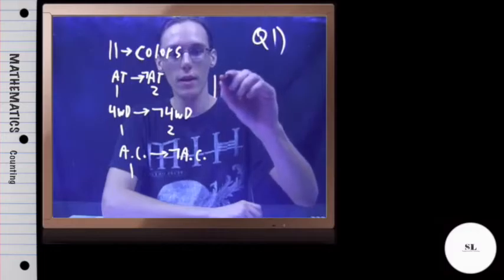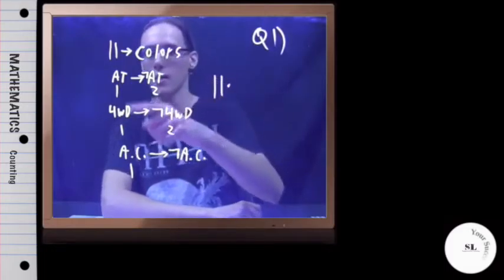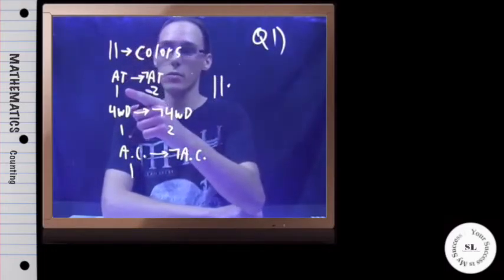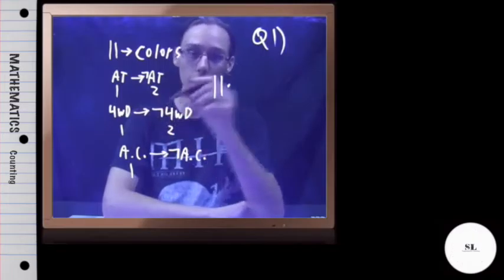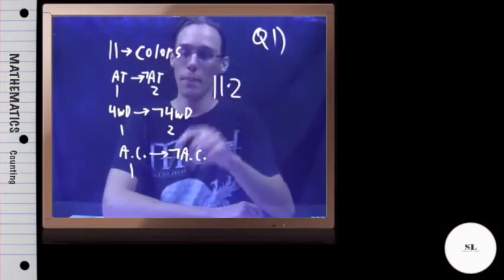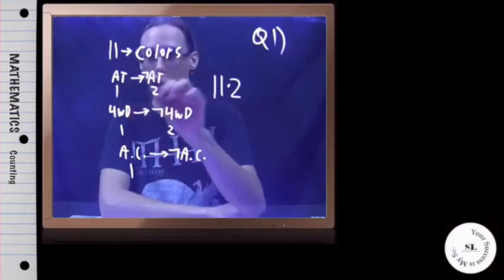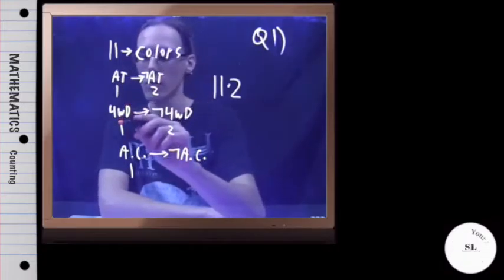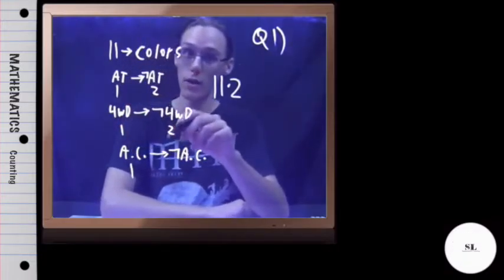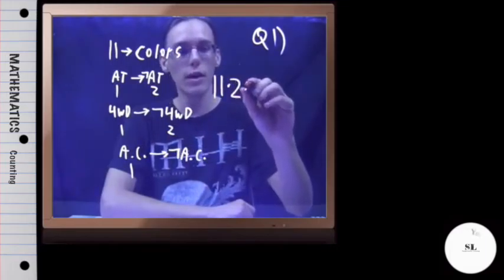So far you've got 11 colors times every single one that has automatic transmission and every single one that does not have automatic transmission. So that's times two. Then you could have all these combinations with four-wheel drive or without four-wheel drive. So that's times two again.